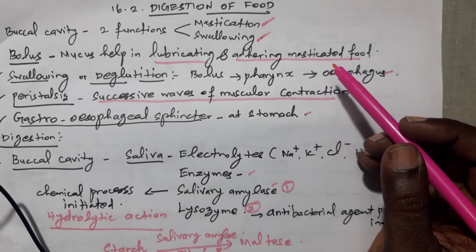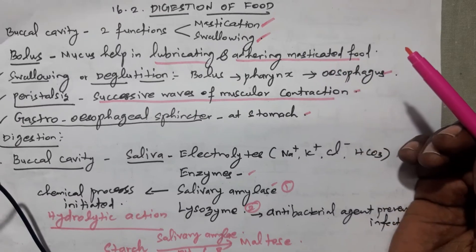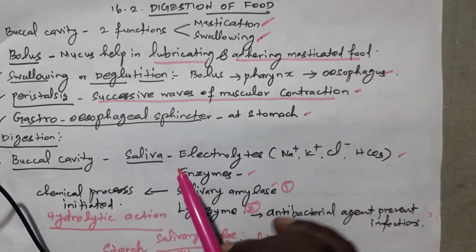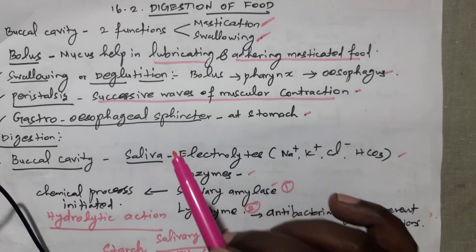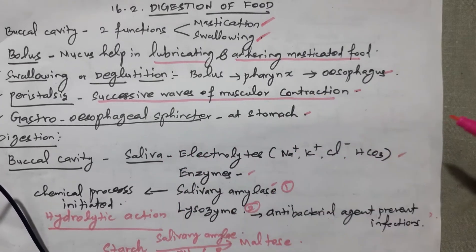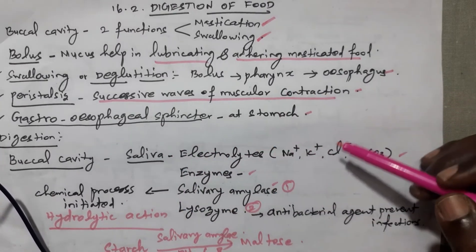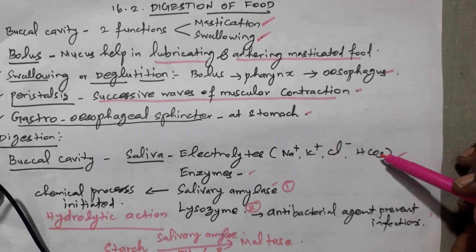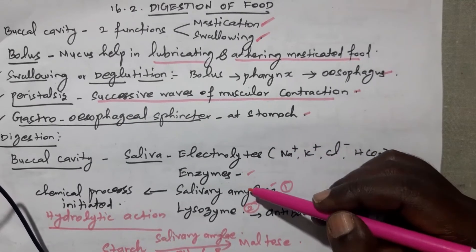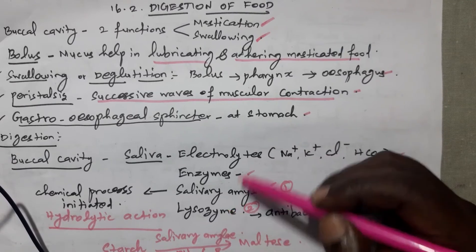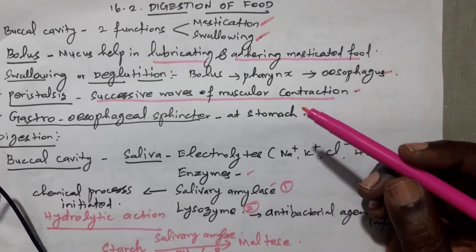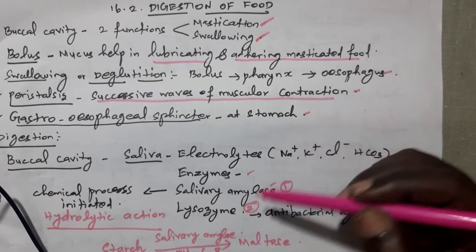First is the buccal cavity activity. Saliva is secreted by three pairs of salivary glands and is secreted with four things: electrolytes — sodium, potassium, chlorine, and bicarbonate — and some enzymes: salivary amylase and lysozyme, as mentioned in your book.